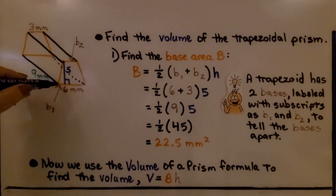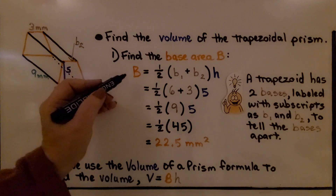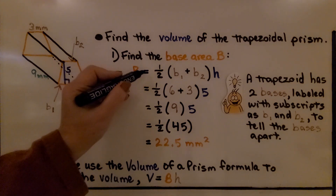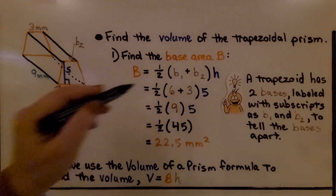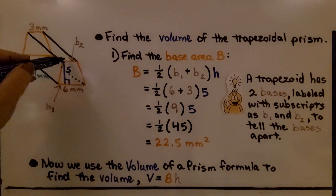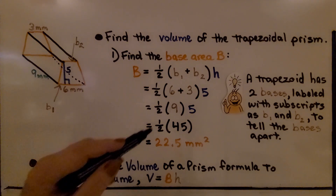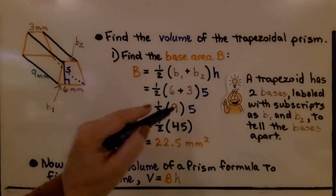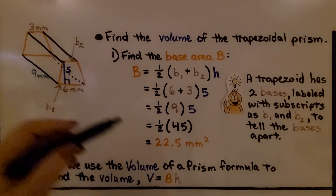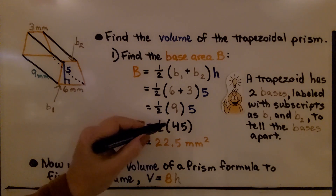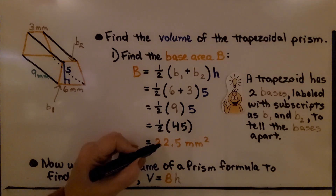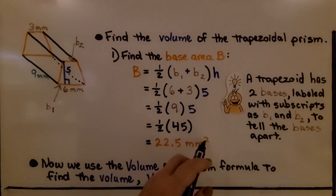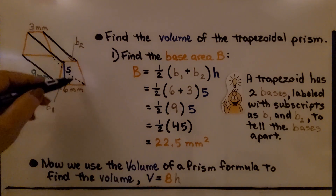This is base one and that's base two. The formula to find the base area B for a trapezoid is: base area equals one-half times (b sub one plus b sub two) times the height. We add base one and base two: six plus three equals nine. We multiply nine times the height of five and get 45. Multiply by one-half and we get 22.5 millimeters squared. Because this is area, it's to the second power.